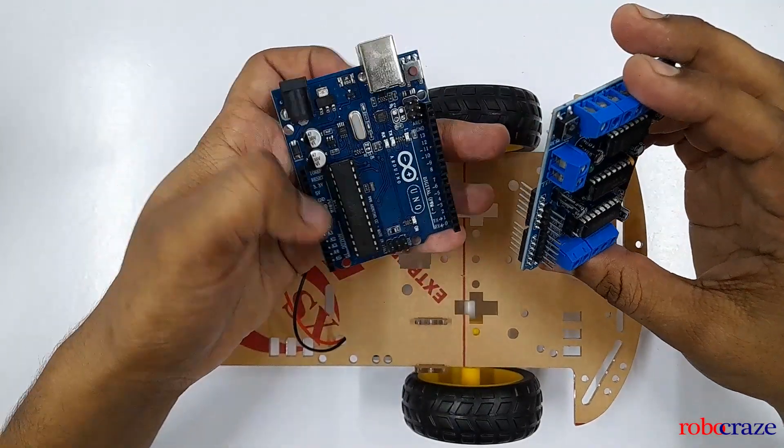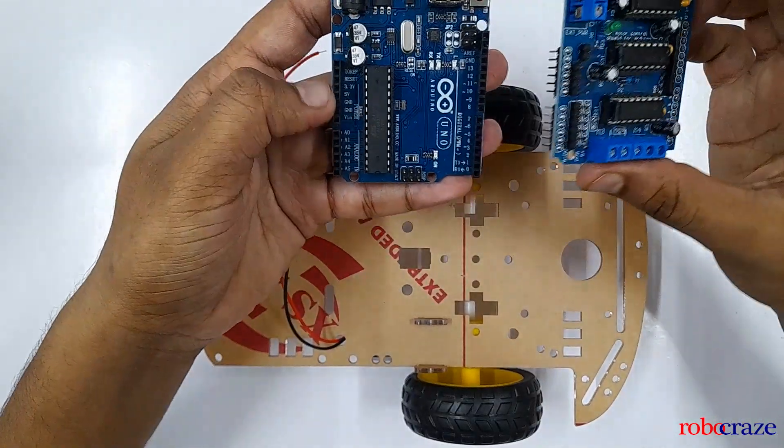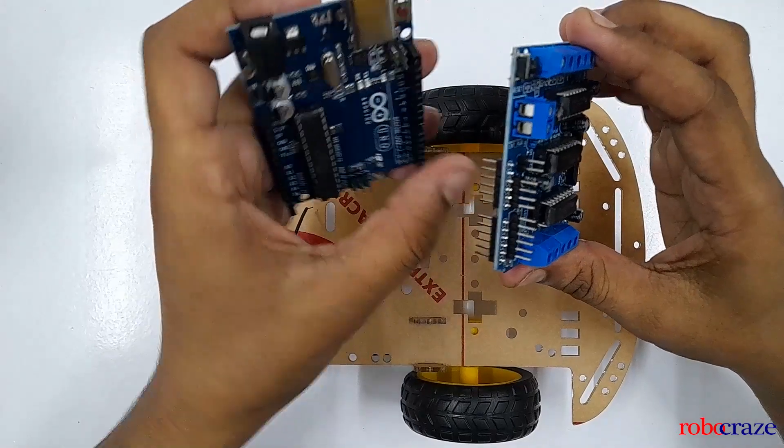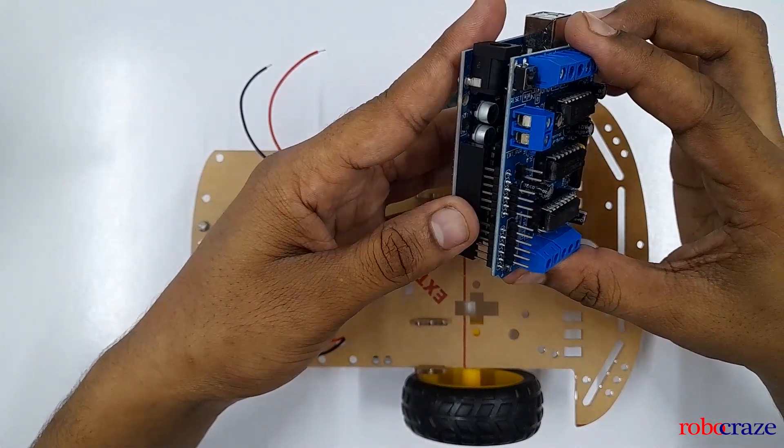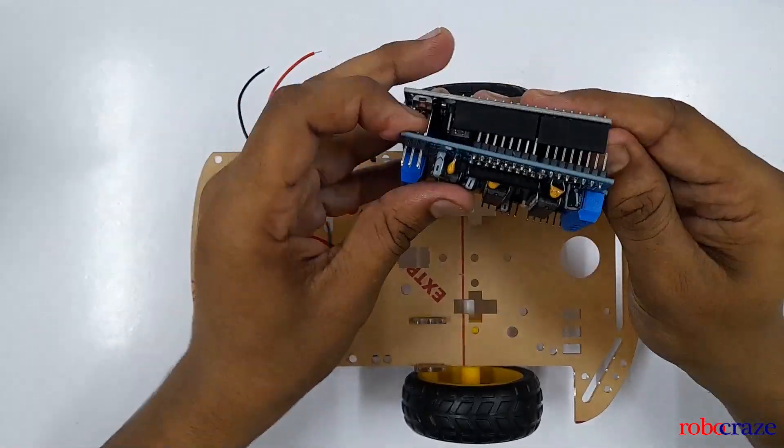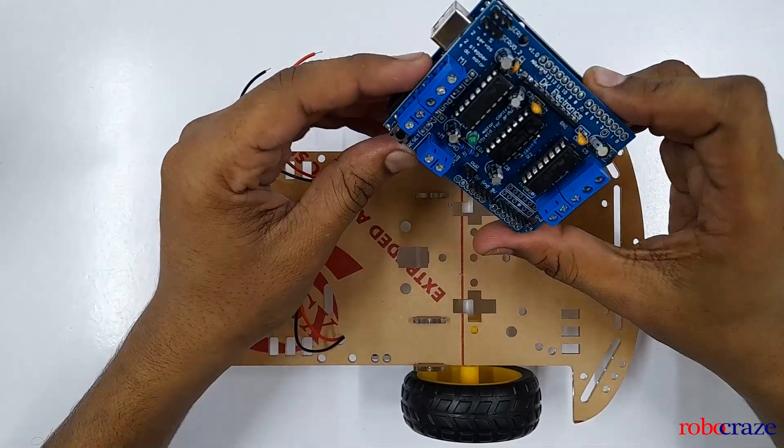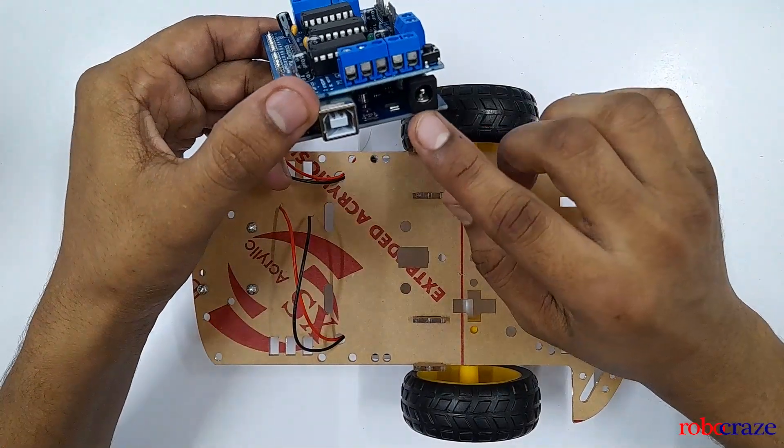Mount it in such a way that these pins should be aligned on this side. As you can see this is Vin, ground, from one here, so this will go in like this in this direction. Again mounted in a way that the motor M2, as you can see M2 and M1, should be on the DC jack side of the Arduino Uno.